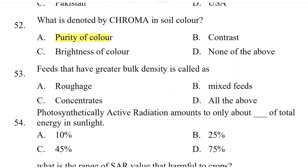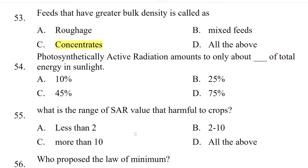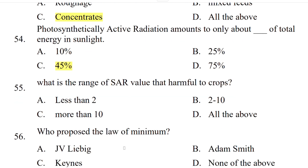Feeds that have high bulk density — is it coarse roughage, mixed feeds, concentrates, or all of the above? The correct answer is concentrates. Photosynthetically active radiation amounts to only about what percentage of total energy in sunlight? 10%, 25%, 45%, or 75%?